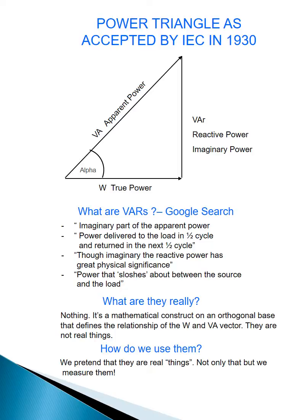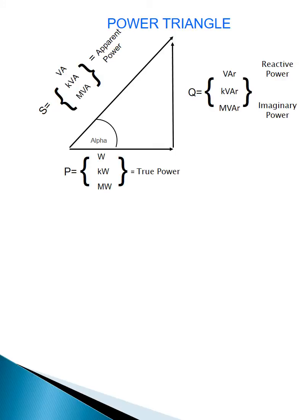How do we use them then? We pretend they're real things. Not only that, but we measure them. So here's the power triangle with the usual units we would use in power engineering: kilowatts, megawatts, megaVARs, MVA. And of course, because the power triangle is a right angle, we will have access to all the usual trigonometric functions that relate these units.